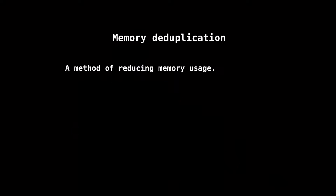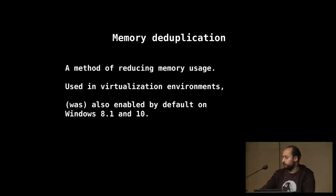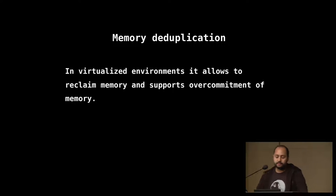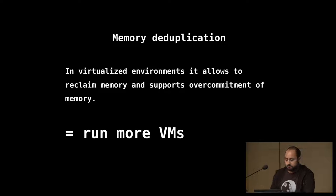Memory deduplication is a method to reduce memory consumption, usually used in a virtualized environment but not exclusively. It was also enabled — emphasis on WAS — in Windows 8.1 and 10. In virtualized environments, the virtual machine monitor tries to save memory by over-committing resources, and memory deduplication is a technique to reclaim certain pages in a clever way — or easily speaking, run more VMs.